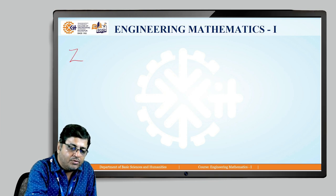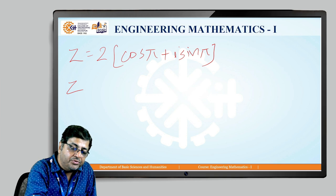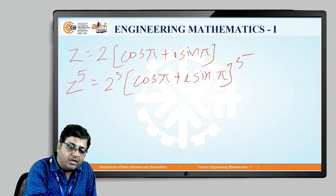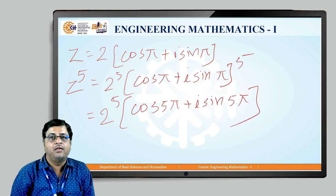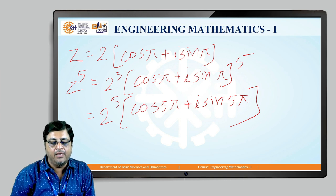Suppose z equals 2(cos π + i sin π), then z raised to 5 will be 2 raised to 5 times (cos π + i sin π) raised to 5. Now applying De Moivre's theorem, we get 2 raised to 5 times (cos 5π + i sin 5π). So in this manner we can use De Moivre's theorem.